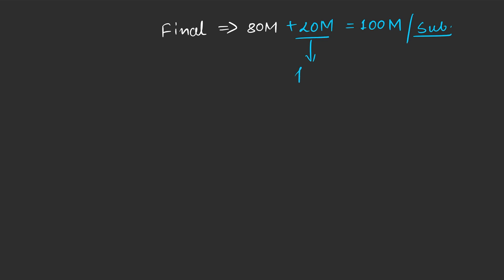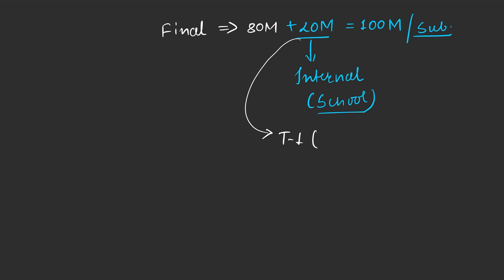What will be the remaining 20 marks? That will be internal marks. Internal means those marks will be sent to the school. The internal marks include term 1 — the half-yearly — along with unit tests. Combined, they will remain 20 marks.